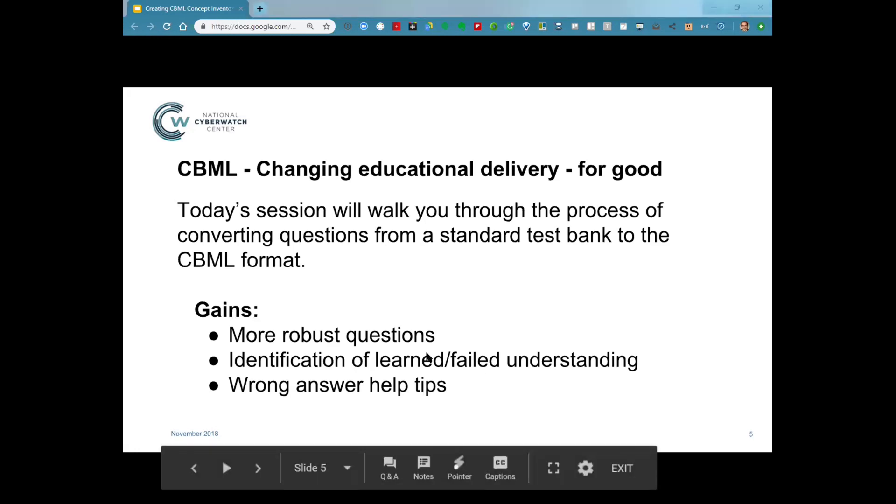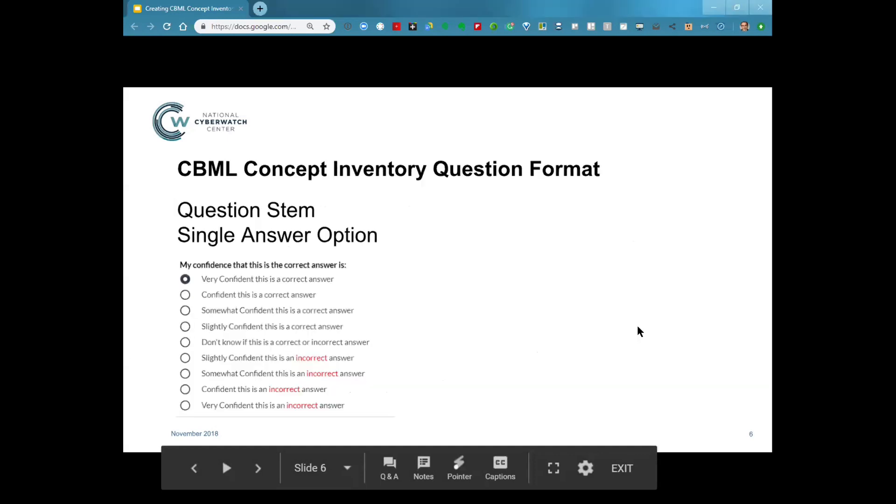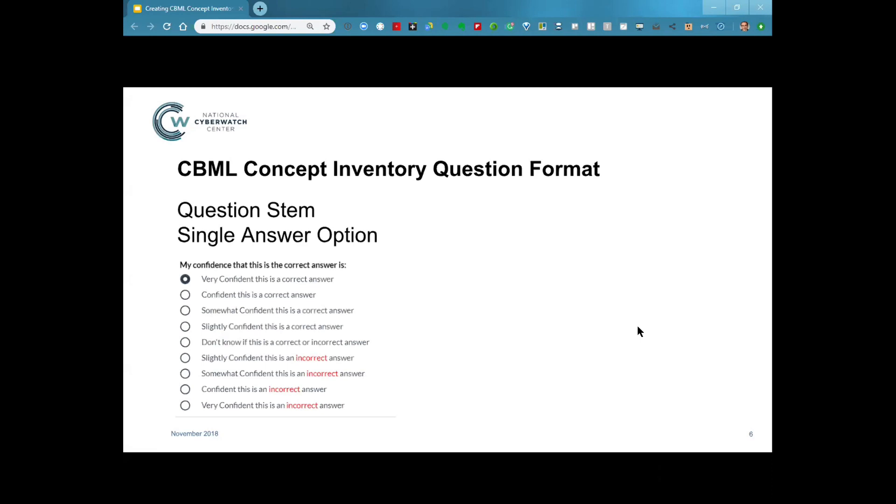Thanks, Barbara. All right, well, let's talk a little bit about what makes these questions so different. So this is an example of a competency-based mastery learning question. It's what's called a concept inventory. There actually are three different kinds of inventories that we build in competency-based mastery learning. The first is this, which is seeking to understand someone's proficiency in understanding a particular issue. And then there is an action inventory associated with determining their level of skill and applying these concepts in a procedure. And then finally, there are judgment inventories, which are used to determine someone's ability to adapt their knowledge and skill into a different situation. But today, we're going to focus on the concept inventory question.